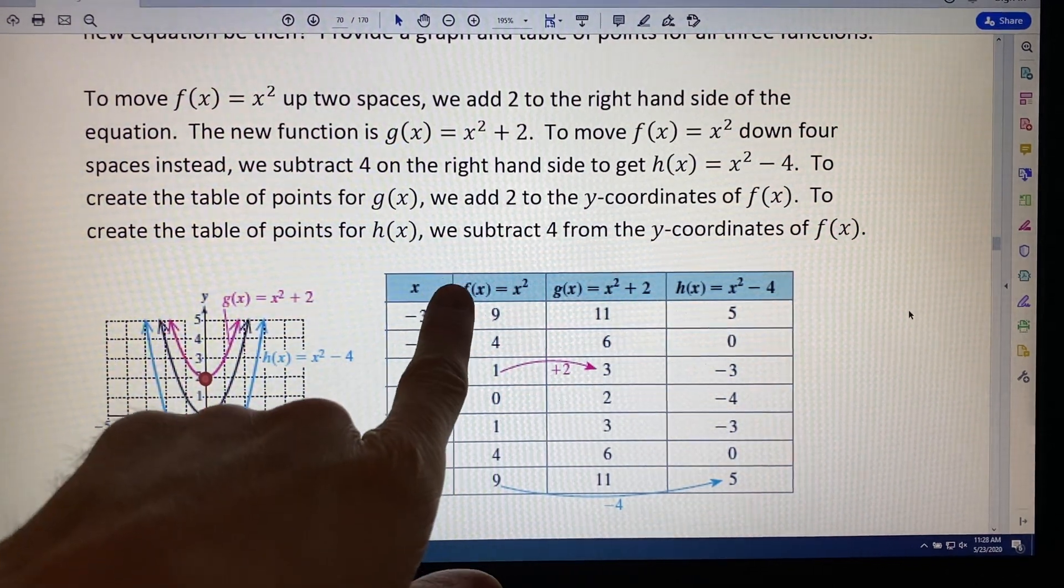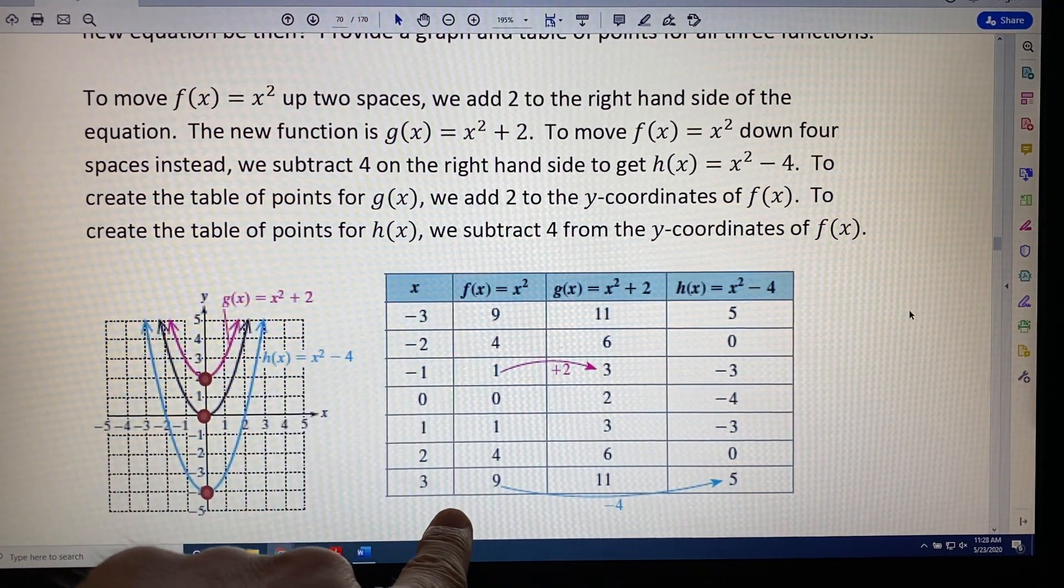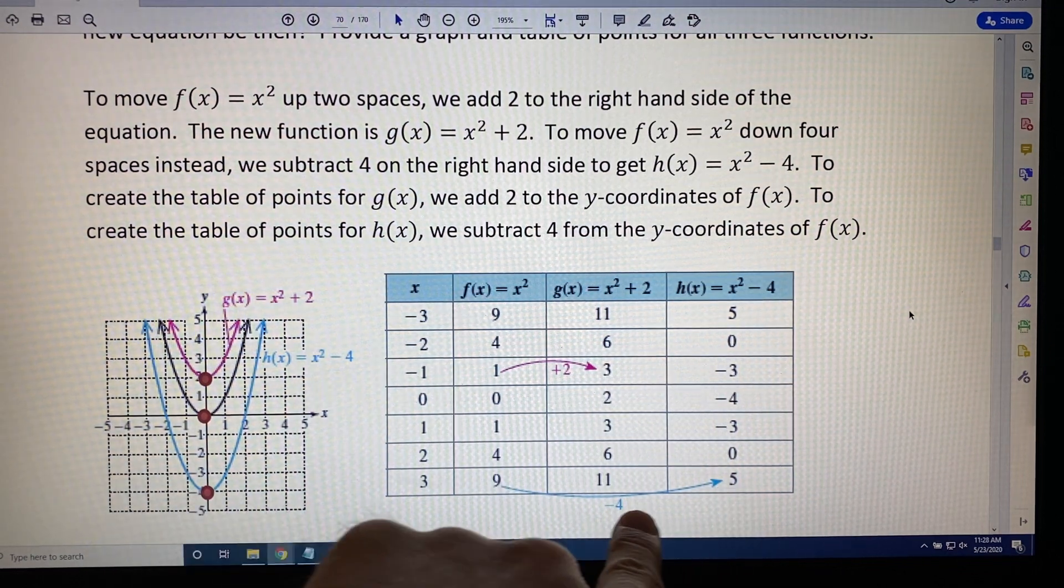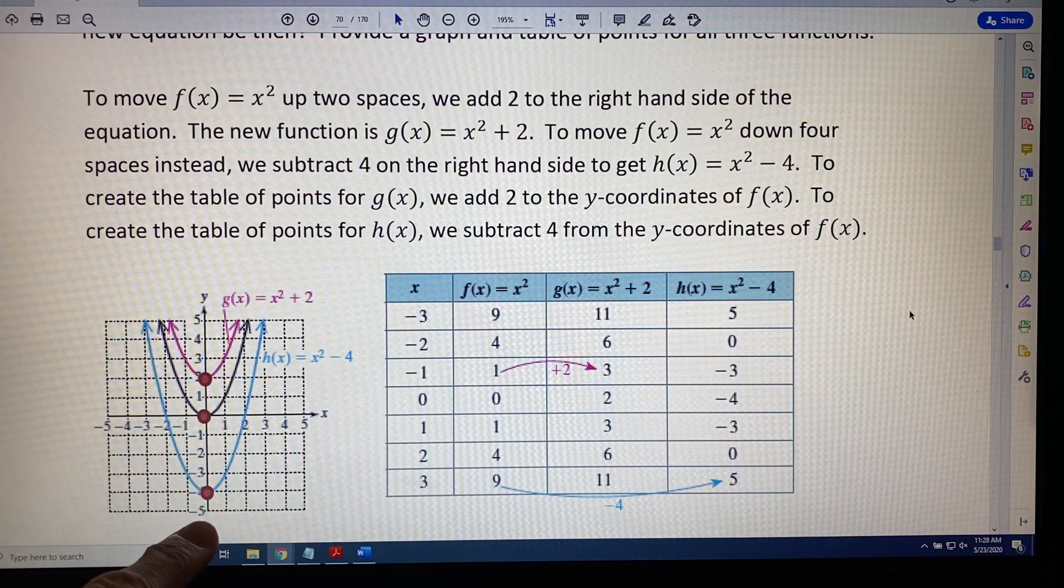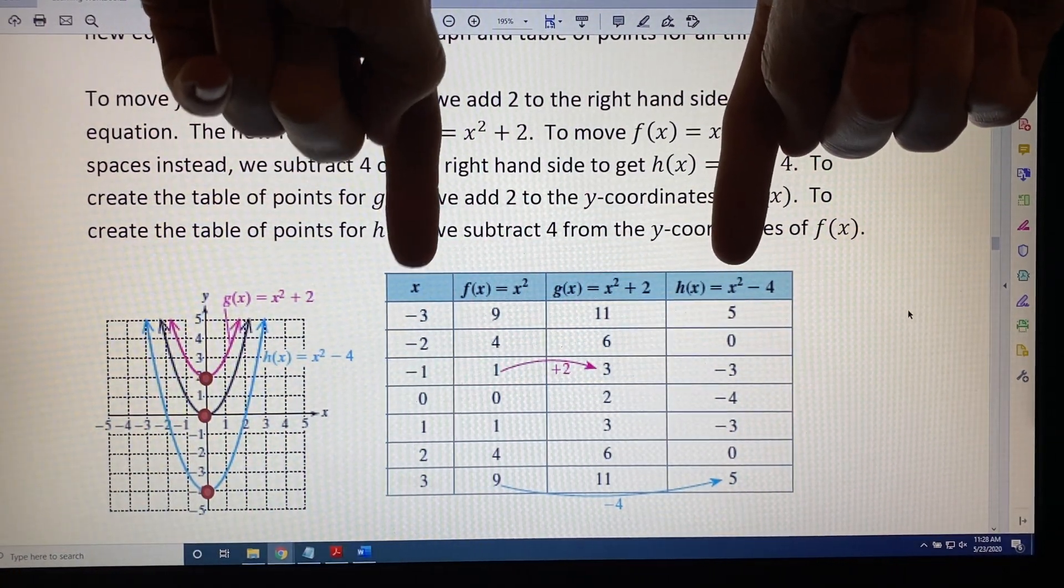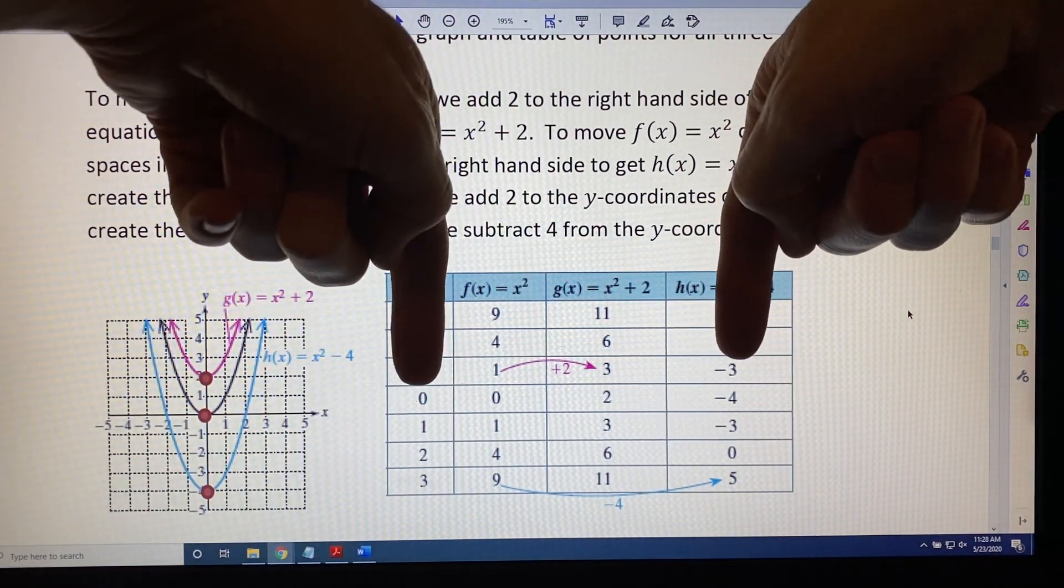Now, in a very similar fashion, when we take these two columns here of our basic function, f(x) = x², and we subtract 4 from all of the y coordinates, that gives us a table for the blue function shown over here, where these two columns represent the coordinates x and y. For example, you might notice (0, -4) is one of the points on our blue curve.